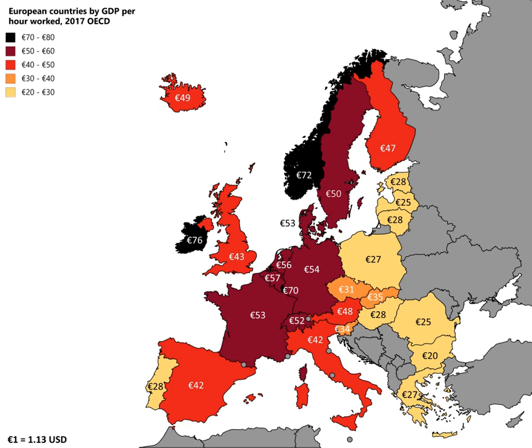To facilitate international comparisons of labor productivity, a number of organizations, such as the OECD, the Groningen Growth Center, International Labor Comparisons Program, and the Conference Board, prepare productivity data adjusted specifically to enhance the data's international comparability.